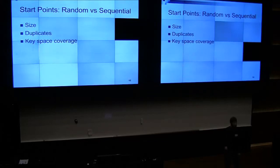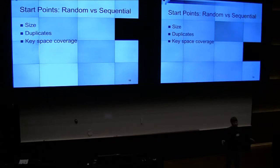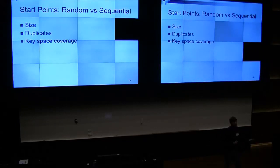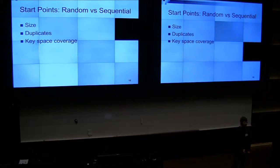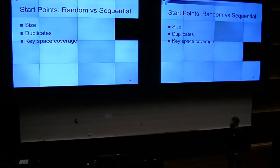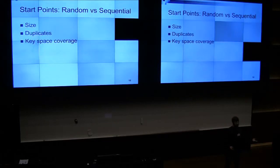Duplicate chains. When you use random start points, you're going to be wasting cycles generating chains that duplicate — you generate two random start points, they end up being the same, and you generate the exact same chain, wasting time. Key space coverage: I haven't seen any papers actually describing the benefits of random for key space coverage.